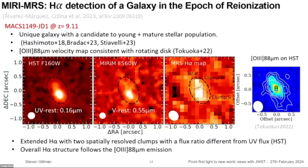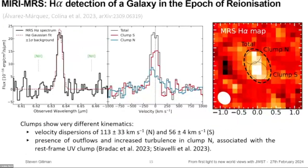Then there's MACS1149-JD1 at redshift 9.11, a slightly lensed object. You could detect it with HST at 1.6 microns, and now with MIRI imaging we have a detection at 5.6 microns. For the first time we can spatially resolve the H-alpha line, which agrees nicely with the O III previously detected. There are two distinct clumps in the H-alpha map with very different kinematics — north versus south — with different velocity dispersions potentially indicating outflows and turbulence in one clump. This shows the importance of spatially resolved analysis rather than integrated quantities.